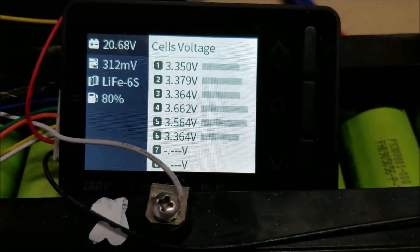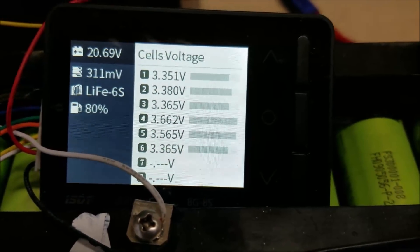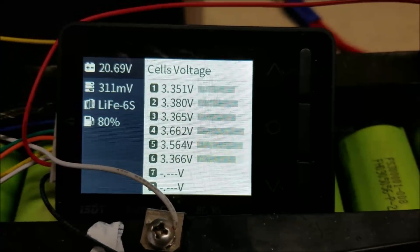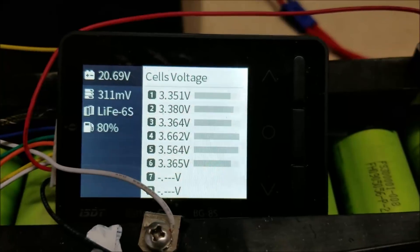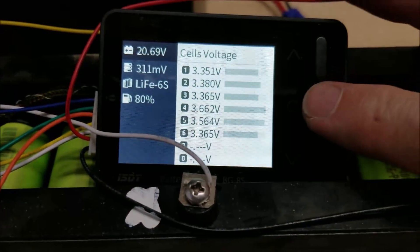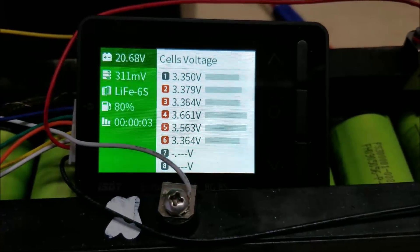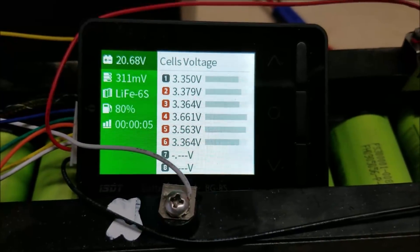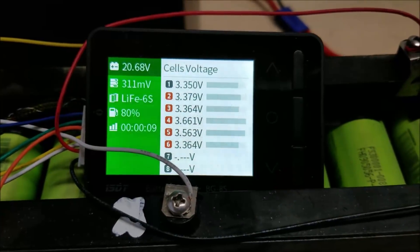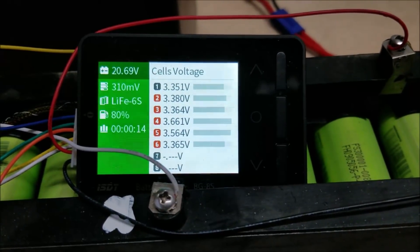So here you can see much more significant imbalance with one of the cells at 3.66, which is actually too high, but the lowest is 3.51, so it's actually similar to the other one. So let's turn on balancing on this one. I will let that go until it's balanced, and if I need to, I'll charge these two groups of cells to get them to match, and then we'll do a discharge test.